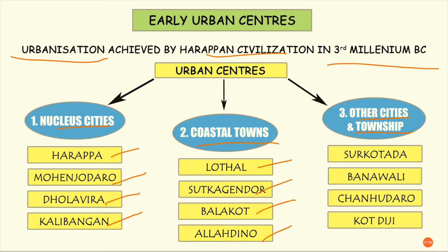Coastal towns are important because in these towns, trade is usually carried out. People from far places would come and trade goods, buy goods, and go back, because land routes are difficult. It is through sea routes or river routes that people from far places usually came to trade. Next we have the other cities and townships, which are simply those towns or cities that existed during the time of the Indus Valley civilization.